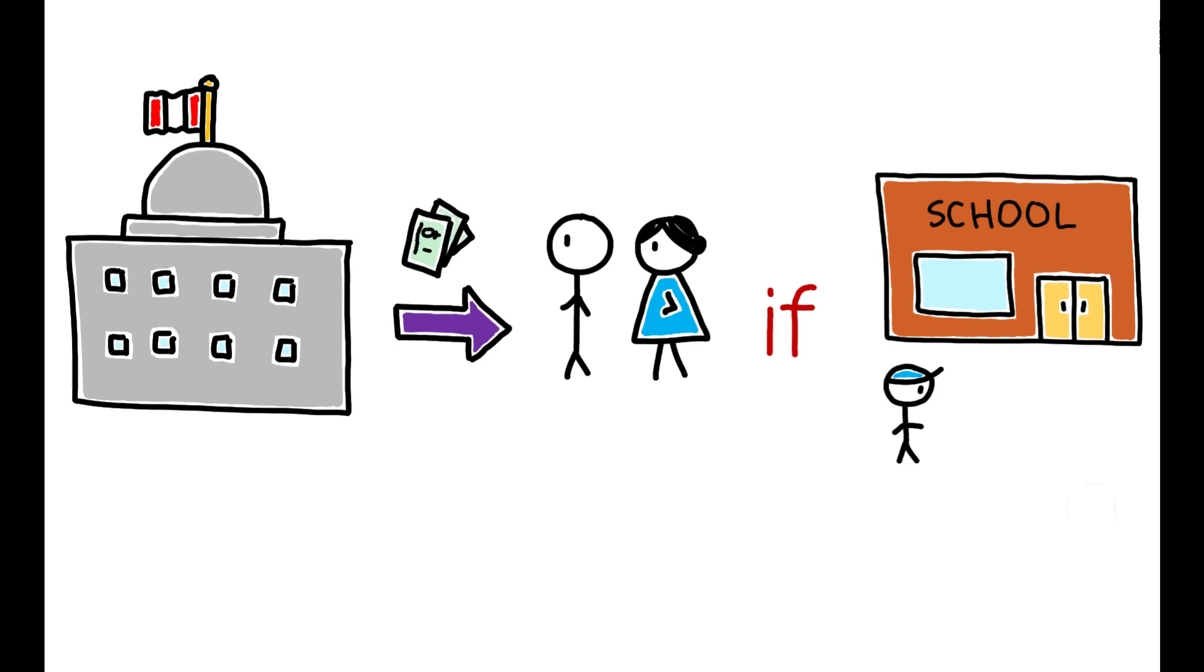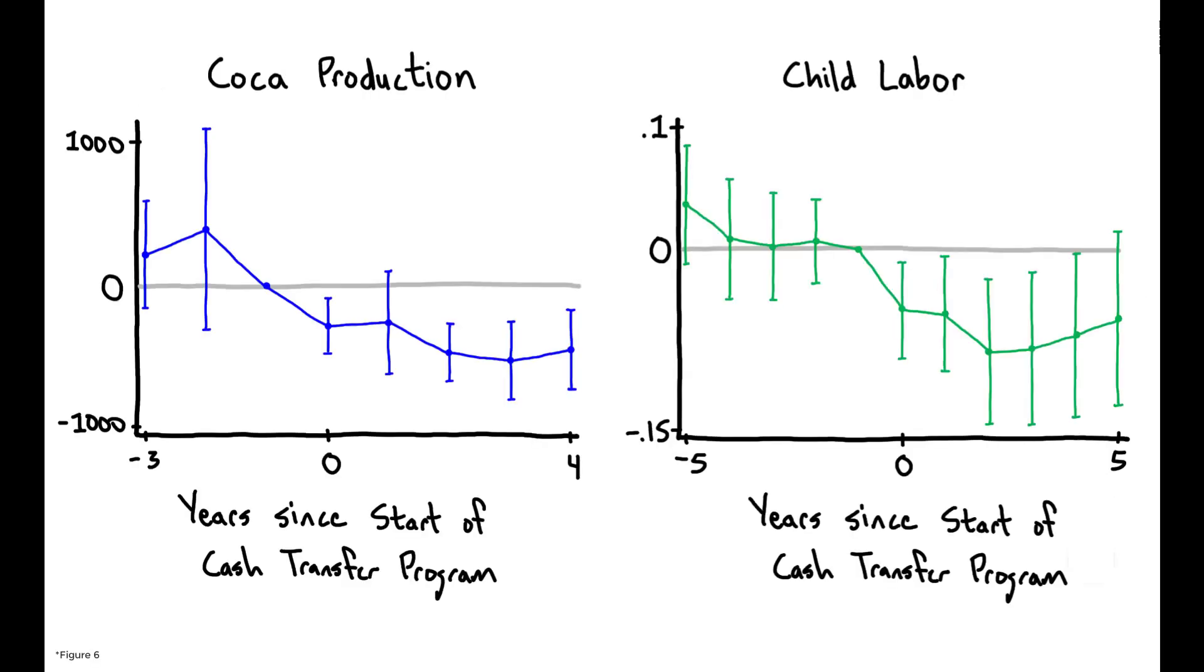During the period of high coca prices in Peru, the government implemented a separate and unrelated program which provided cash transfers to parents on the condition that their children attend school on a daily basis. This figure shows that coca producing areas that implemented this program experienced a significant reduction in both coca production and child labor.